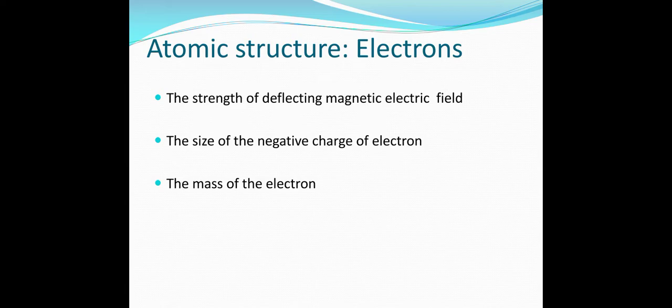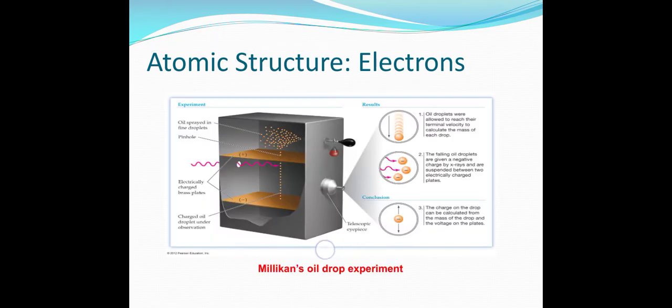The structure of the electron is characterized by three properties: the strength of the deflecting magnetic or electric field, the size of the negative charge of the electron, and the mass of the electron. The mass of the electron was determined by Millikan's oil drop experiment.